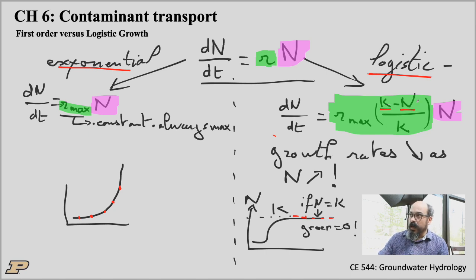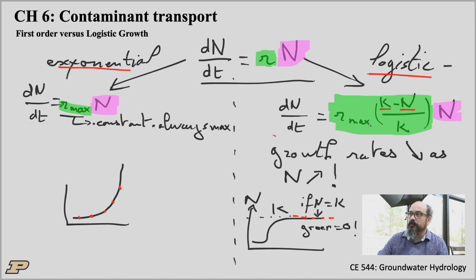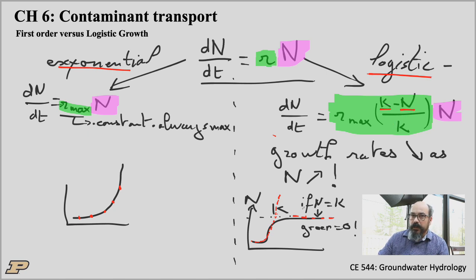At early times, when there are essentially no lions, K over K is one, and the rate of change is r_max — so K minus N is K, K over K is one, so r_max. There is a maximum growth rate. Early on it grows as if it were exponential. But because there's that N dependence, at some point the number of individuals limits the growth rate, so we grow slower and slower.